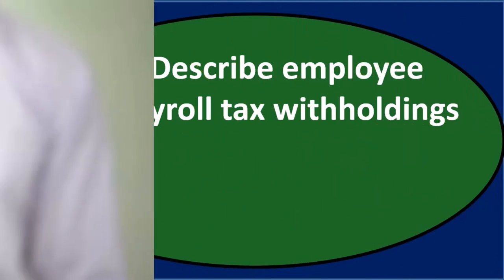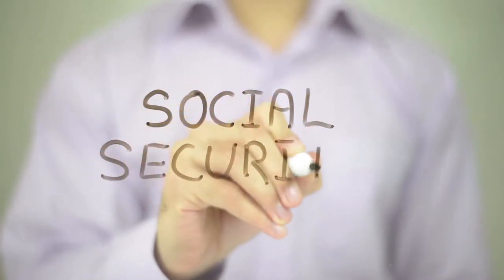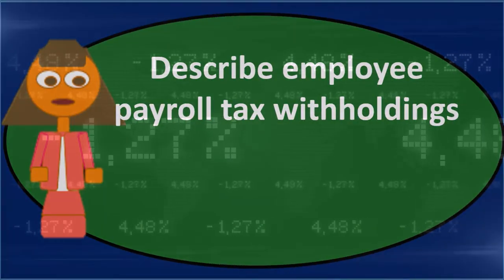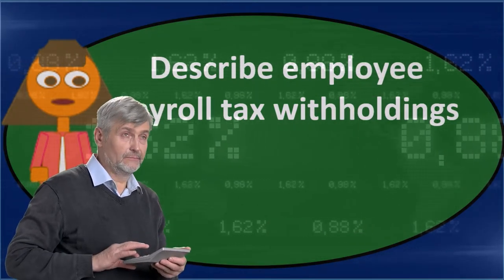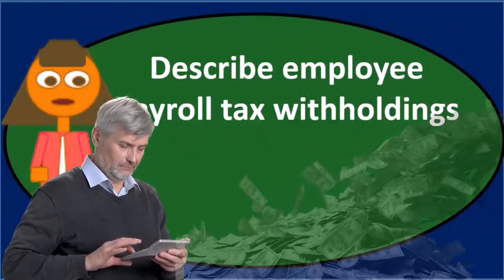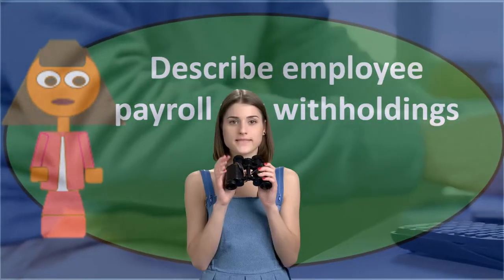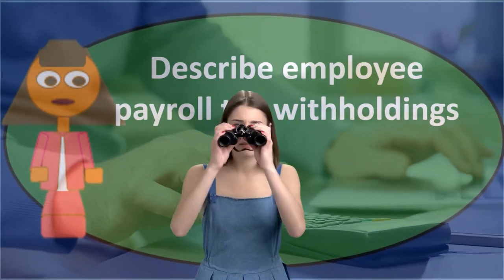Social security wages used for the calculation may be less than total wages if reduced by a cafeteria plan, and there is also a cap that goes up from year to year. It's a fairly high cap — over a hundred thousand — so only higher earners would hit it. At 6.2%, it's more of a flat tax up to that cap, which makes it easy to calculate: simply multiply social security wages by the 6.2% rate.